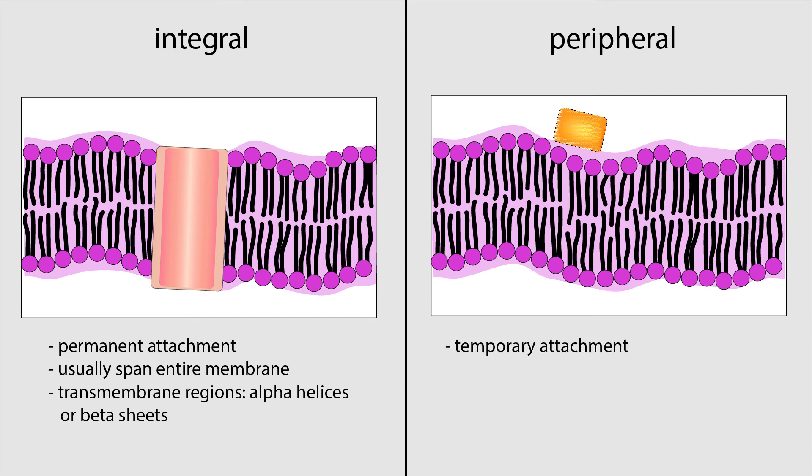Peripheral membrane proteins, on the other hand, are only temporarily attached to membranes. Some of these proteins bind to integral membrane proteins, while others bind to outer regions of the membrane without crossing it entirely. This allows peripheral proteins to assemble just long enough for a specific process to occur, and then disassemble until they are needed again.